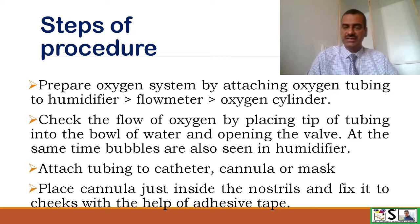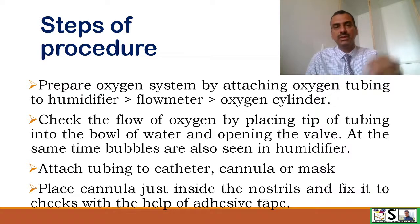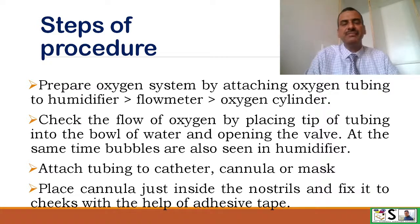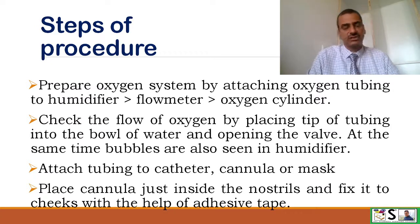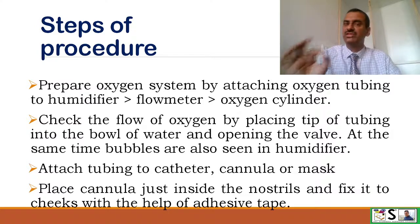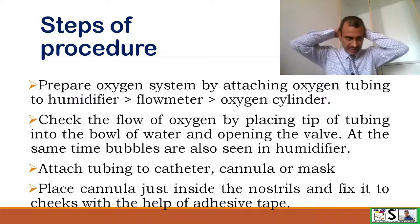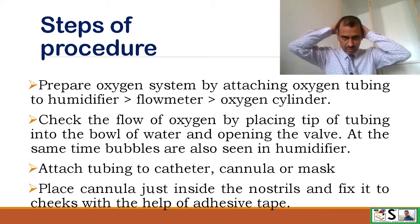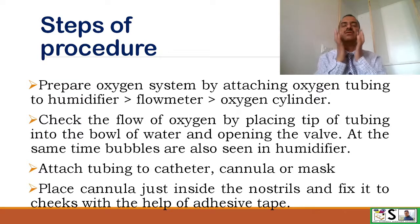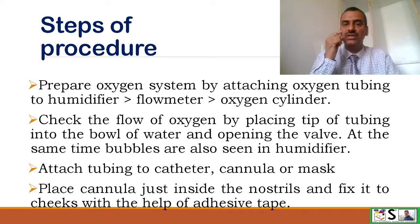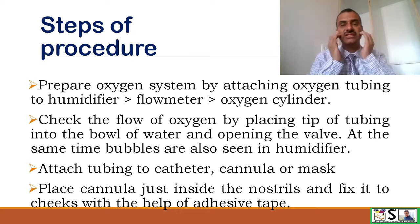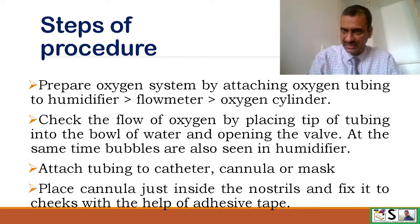Check the flow of oxygen by placing the tip of the tubing into a bowl of water and opening the valve — there will be bubbles in the bowl, confirming oxygen is flowing properly. We can also check for bubbles in the humidifier bottle. Attach the tubing to the catheter, mask, or cannula, whichever method is being used. If using cannula, place it near the nostrils, take the tubing around behind the head, and fix the pipe with plaster on the cheek.